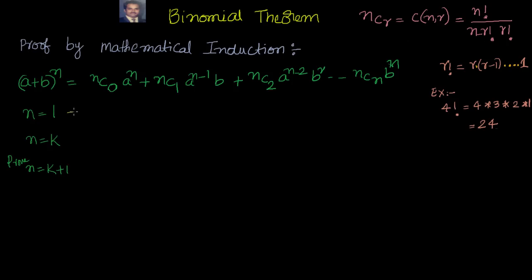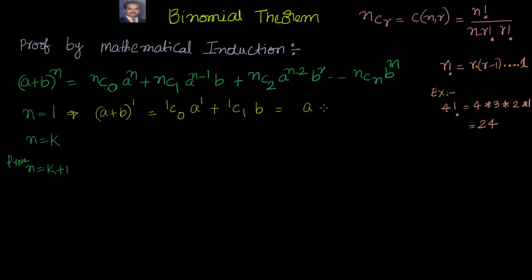For n equal to 1, the first step of the mathematical induction proof: LHS is a plus b all to the power of n, which is 1. I have to prove this equals a plus b using the RHS. On the right hand side with n equal to 1, this becomes 1C0 times a to the power of 1, plus 1C1 times a to the power 0 times b. Since 1C0 and 1C1 both equal 1, this simplifies to a plus b.